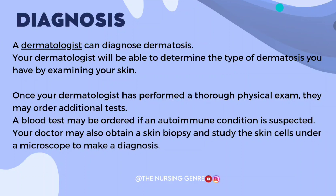Next, diagnosis. A dermatologist can diagnose dermatosis. Your dermatologist will determine the type of dermatosis by examining your skin — first, a physical examination of the skin. Additional blood tests may be ordered if an autoimmune condition is suspected. There is also a skin biopsy to study the skin cells. These are the types of diagnostic tests.